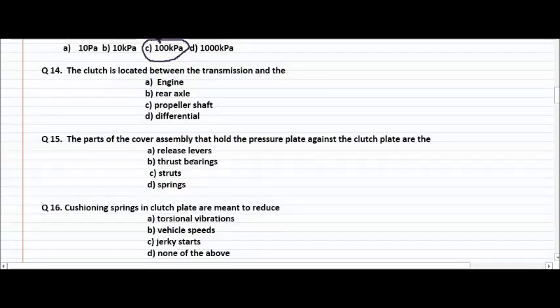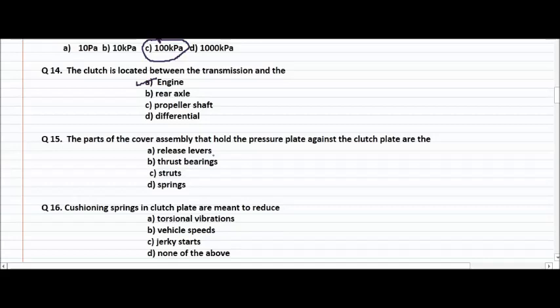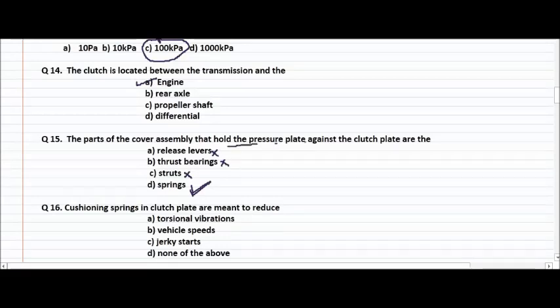A clutch is located between the transmission and the engine, rear axle, propeller shaft, or differential? The right answer is engine. What parts of the cover assembly hold the pressure plate against the clutch plate? The answer is springs — these springs hold the pressure plate against the clutch plate, and they are also called retracting springs.